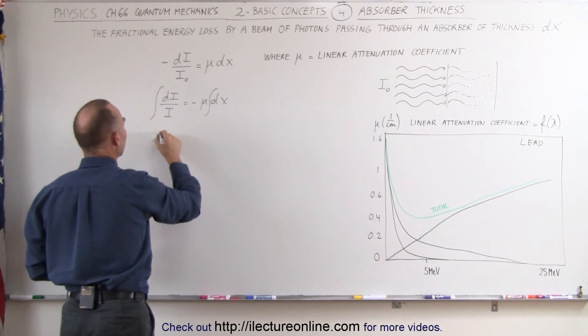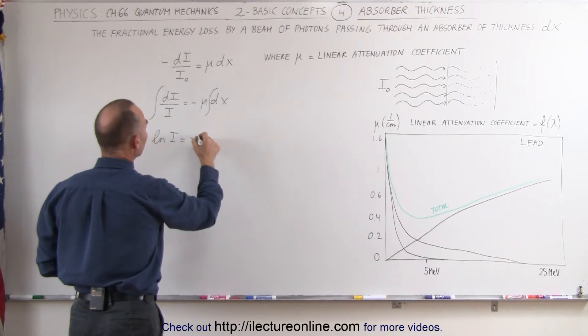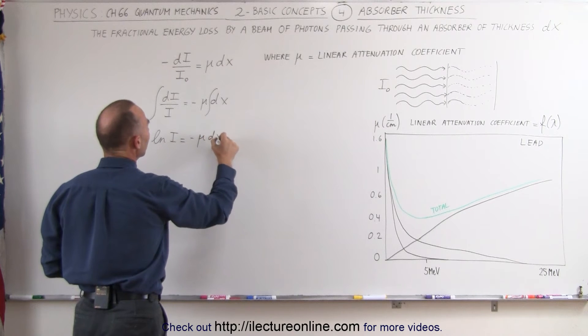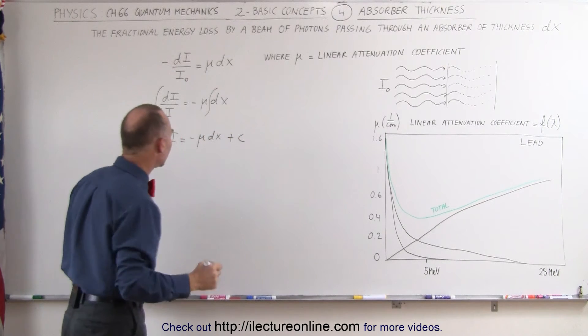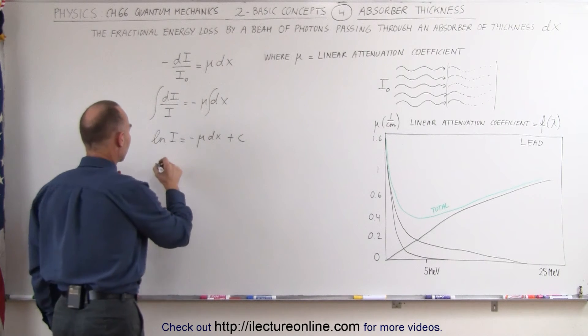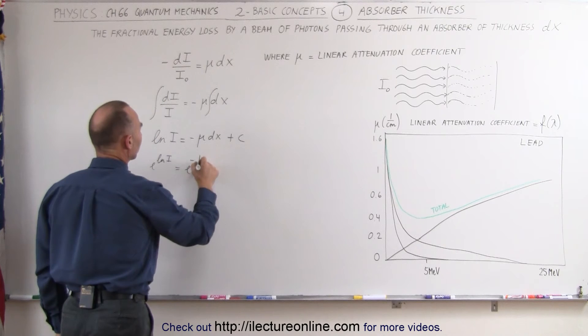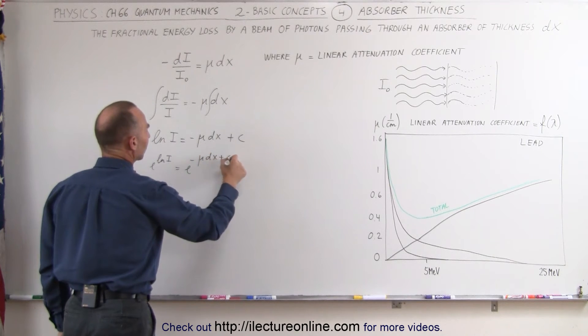So when we integrate this we get the natural log of I is equal to minus μ times dx plus a constant of integration. If we now take the antilog of both sides, we can say e to the natural log of I is equal to e to the minus μ dx plus a constant of integration.